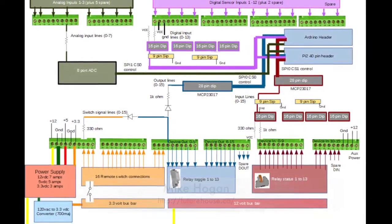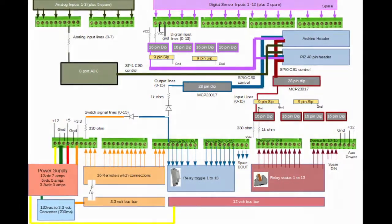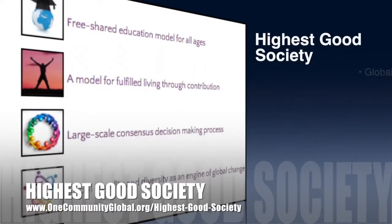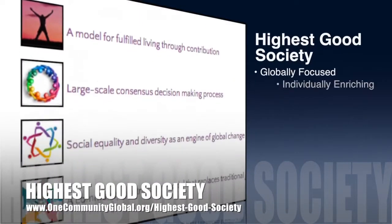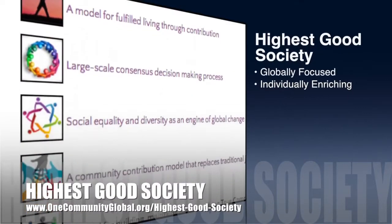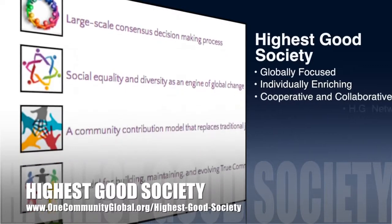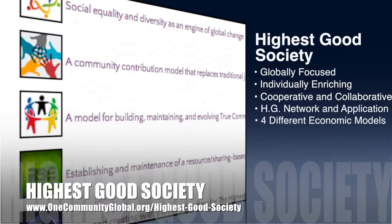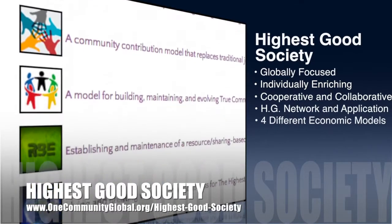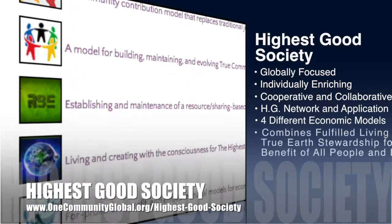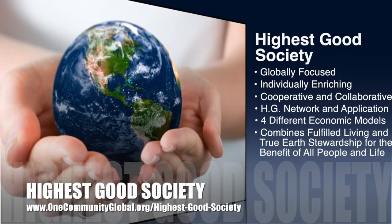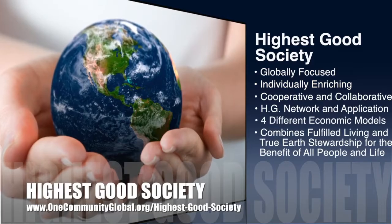The One Community approach to highest good society is globally focused, individually enriching, cooperative and collaborative, includes a highest good network and application, four different economic models, and combines fulfilled living and true earth stewardship for the benefit of all people and all life on this planet.